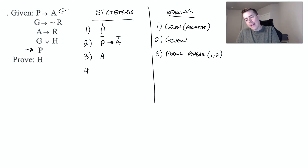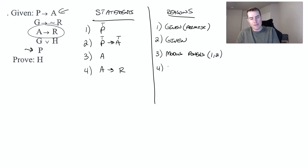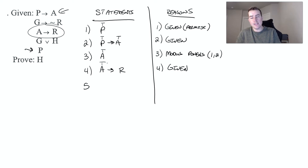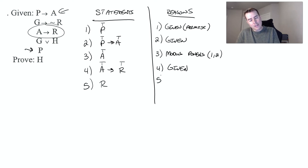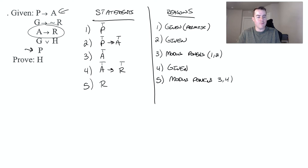Now that we have A, let's look for something else that has A. I see right here we have A implies R — that was given to us. If A is true, and this conditional statement has A, then we know that R is true. That's also modus ponens, and that's going to be from lines three and four.